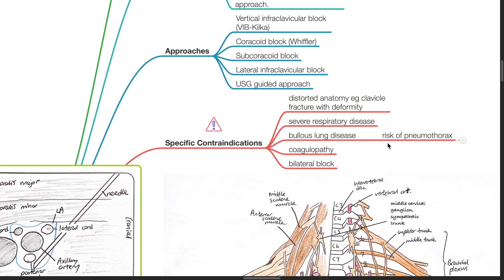Specific contraindications include distorted anatomy such as clavicle fracture with deformity, severe respiratory disease, bullous lung disease due to risk of pneumothorax, coagulopathy, and bilateral block.